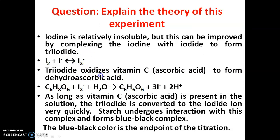The I3 minus undergoes interaction with vitamin C, which mainly contains ascorbic acid, and forms dehydroascorbic acid. Ascorbic acid undergoes interaction with triiodide in the presence of water, which gives dehydroascorbic acid plus 3I minus plus 2H plus ions.